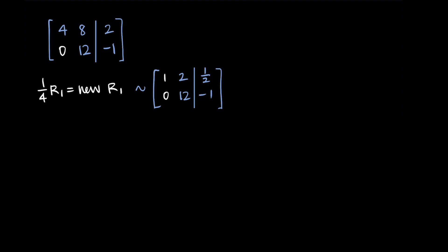My next goal is to get a one where the 12 currently is. I'm doing that rather than tackling the 2, because there's an order that keeps things going smoothly. So I take the second row and divide it by 12 — that means we'll have fractions, but that's okay. Taking one-twelfth of row two: zero divided by 12 is zero, 12 divided by 12 gives me the one I'm looking for, and negative 1 divided by 12 is negative one-twelfth.